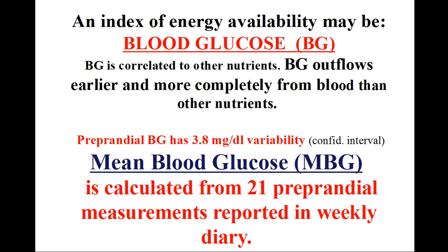Energy availability is important and requires an assessment. An index of energy availability may be blood glucose (BG), for three considerations: BG is correlated to other nutrients; BG outflows earlier; and, three, more completely from blood than other nutrients. Fasting BG is poorly reliable, but preprandial BG has 3.8 mg/dL variability in the same subjects, confidence interval. Mean blood glucose (MBG) is calculated from 21 preprandial measurements reported in a weekly diary.